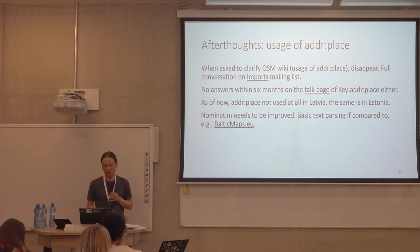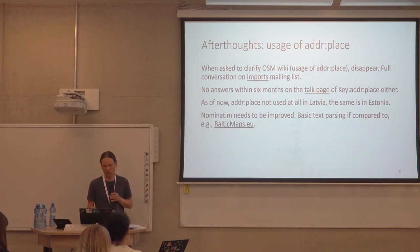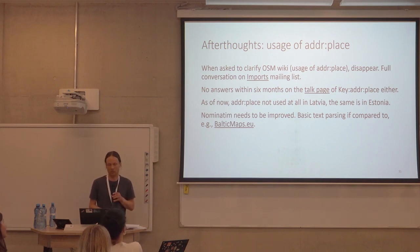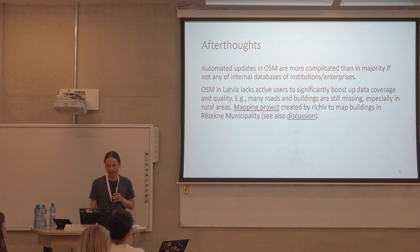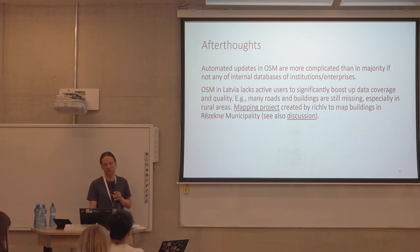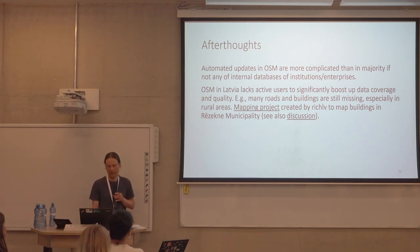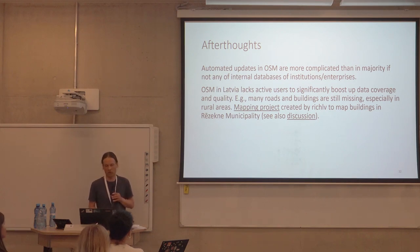We use the same principle as used in Estonia, and to my understanding it is fine to use the approach we use currently — we do not use addr:place at all. Also, the search engine Nominatim needs to be improved because the text parsing compared to other tools is less sophisticated. The automated updates in OpenStreetMap are more reliably automated than in the majority — if not any — internal databases of institutions and enterprises, because there are many other things to care about. OpenStreetMap also lacks active users to significantly boost data coverage and quality — many roads and buildings are still missing, especially in rural areas. There is a mapping project to map buildings and reserves, and if you want to help, you can check it out.